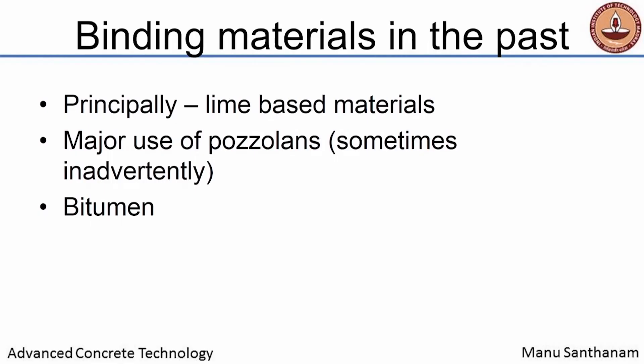Without further ado, let us first talk about what binding materials were used in the past. Most of our ancient heritage monuments, if you think about them, have different types of binders binding the different masonry units. Most of our heritage monuments are in stone and brick, and these masonry units were bound typically by binders based either on lime, gypsum, and sometimes even bitumen has been used quite significantly in the past.